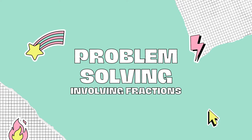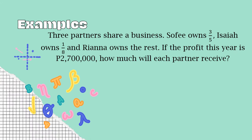For our first example, we have three partners who share a business. Sophie owns 3/5, Isaiah owns 1/8, and Rihanna owns the rest. If the profit this year is 2,700,000, how much will each partner receive?